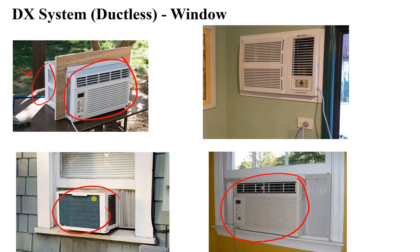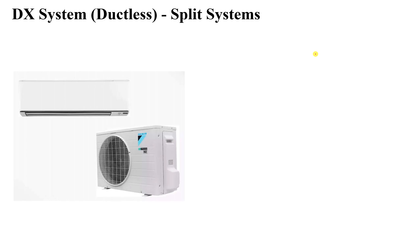You can see another example here — there is a plug for this air conditioning system and outside you will find the outdoor unit behind it. This is what we call a window unit, without any kind of duct. Another type found in modern homes is the split system, which you can find in many houses, with an indoor unit and an outdoor unit.